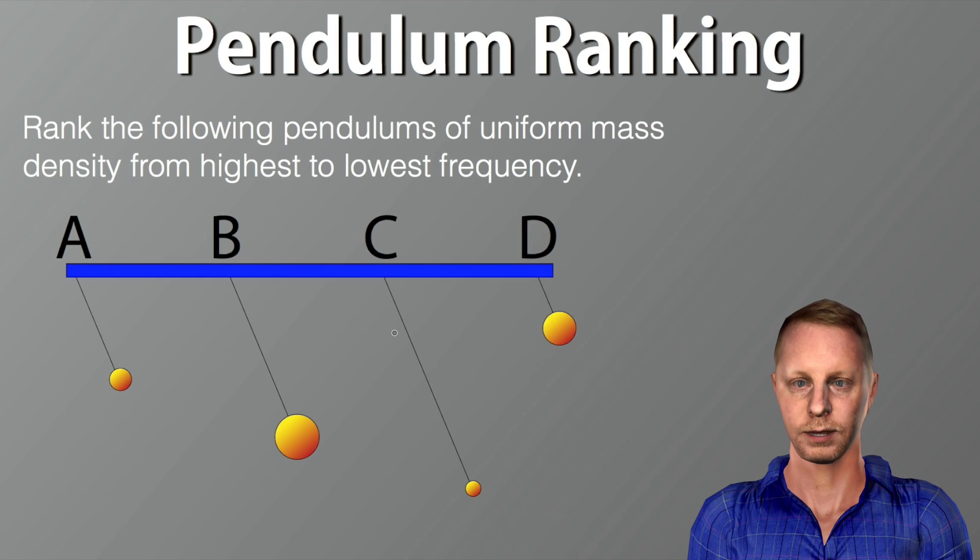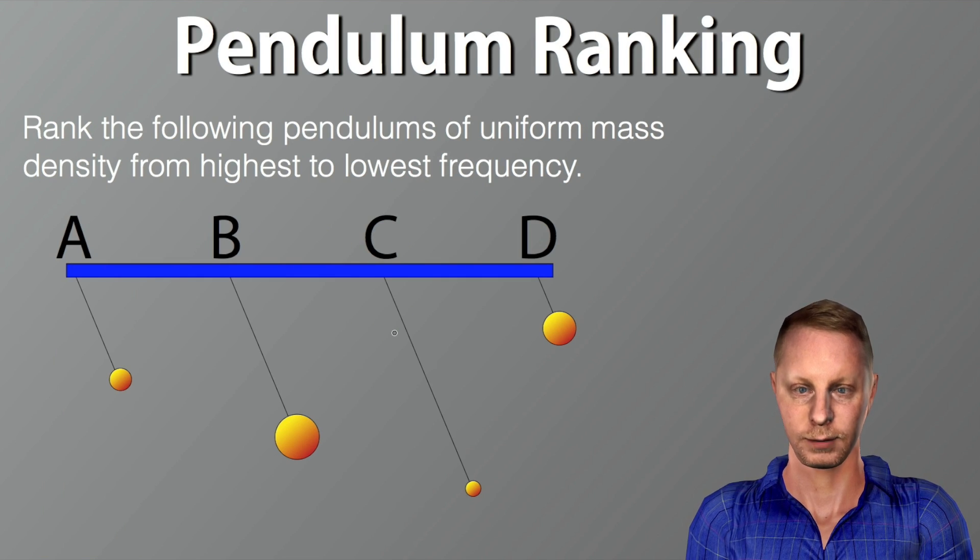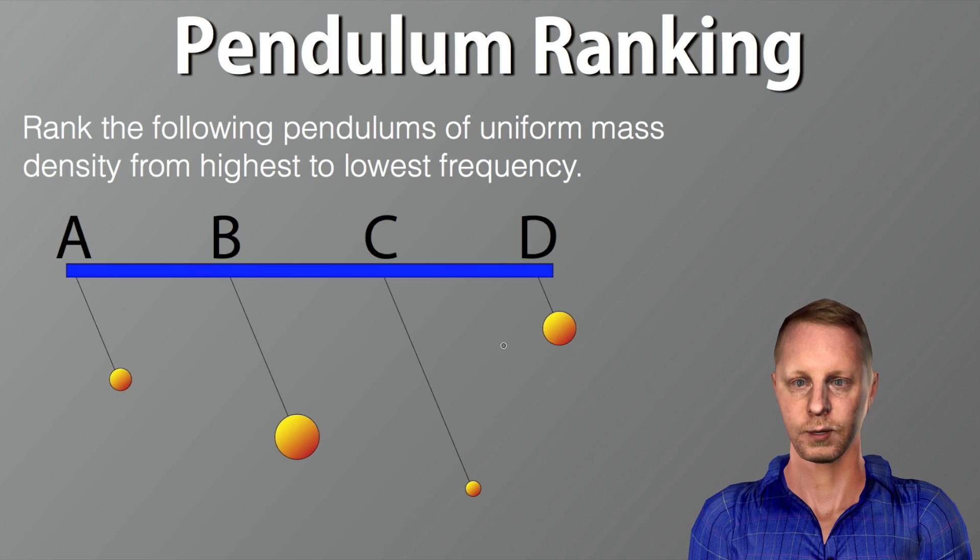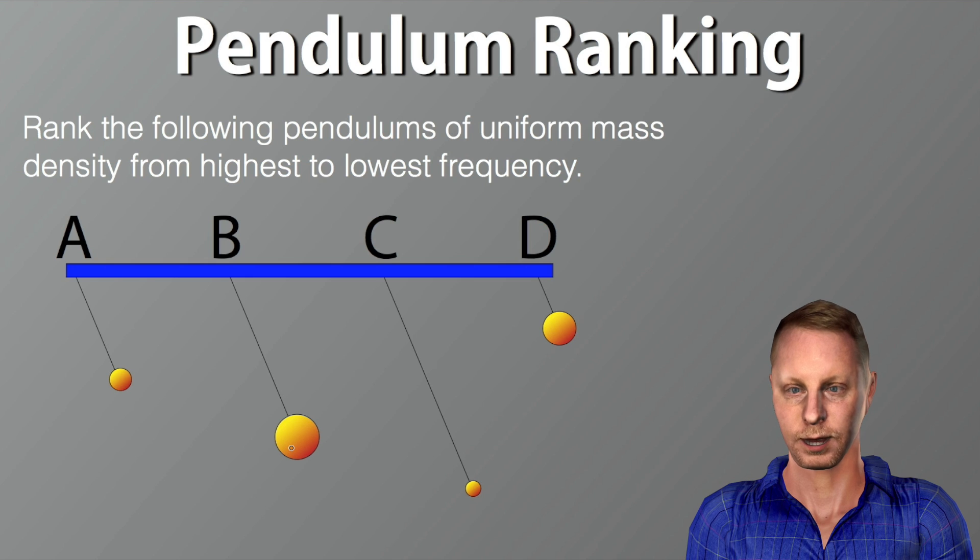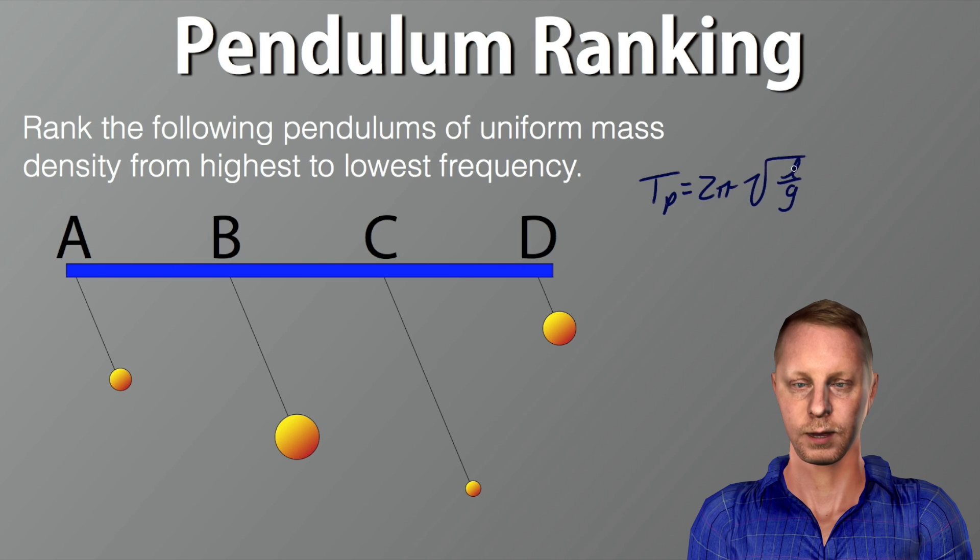Another problem here. Rank the following pendulums of uniform mass density from highest to lowest frequency. So they all have a uniform mass density, which means that the bigger we see, the larger the sphere at the end of the pendulum, the more mass it has. Thankfully, we also know mass doesn't make a difference in the period of the pendulum.